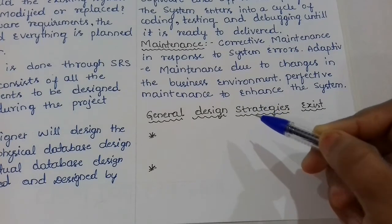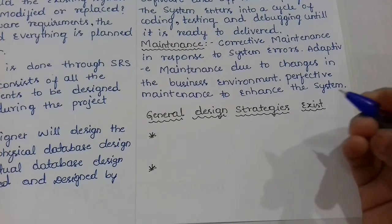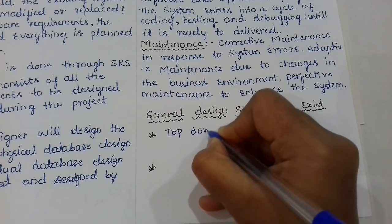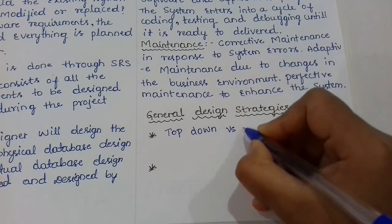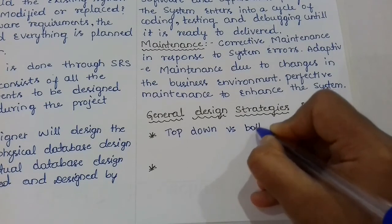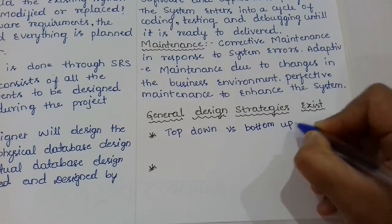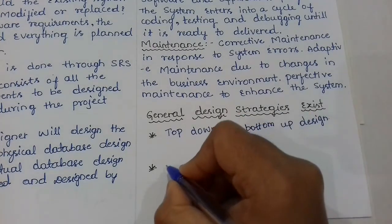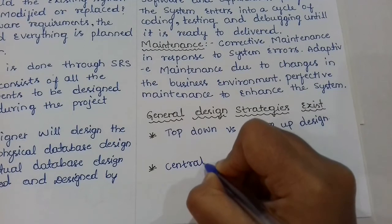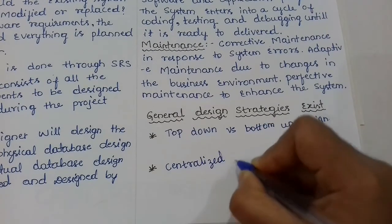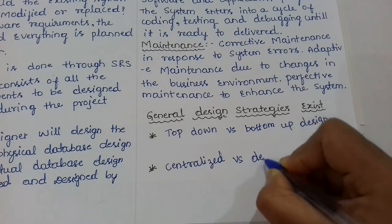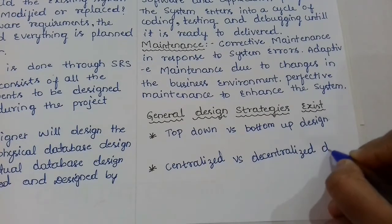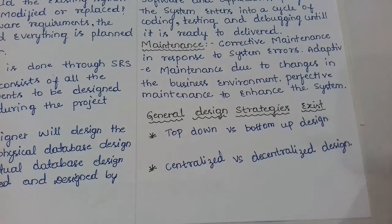This covers all the phases in database designing. Next we have general design strategies. There are two general design strategies: top-down versus bottom-up design, and centralized versus decentralized design.